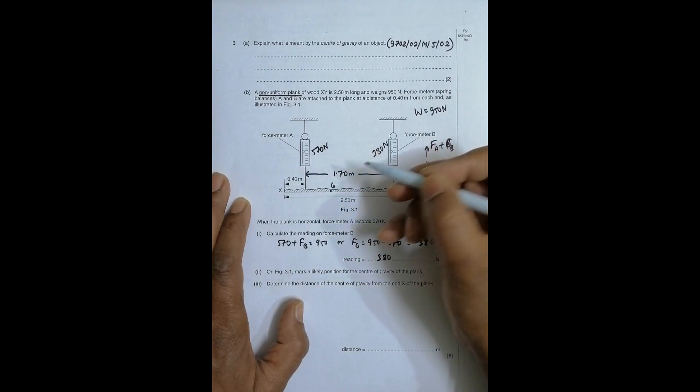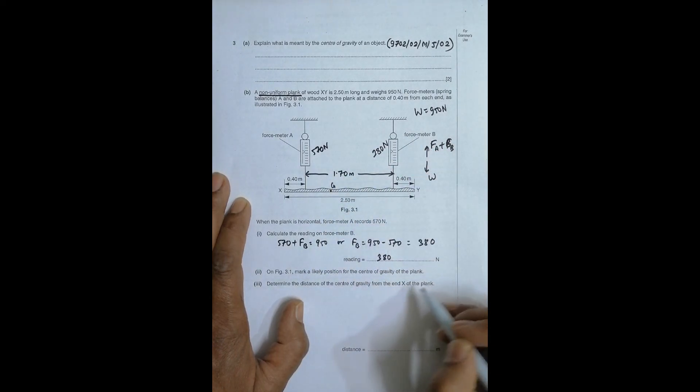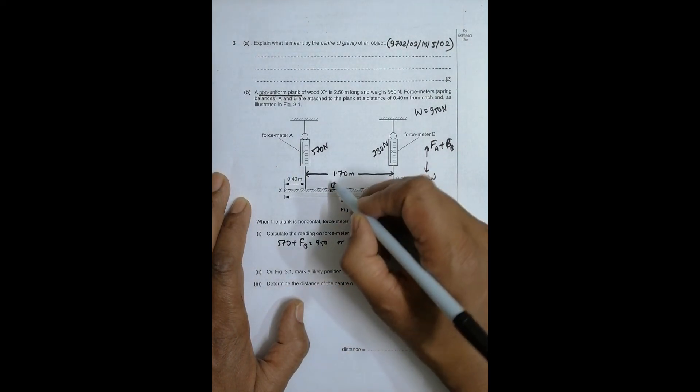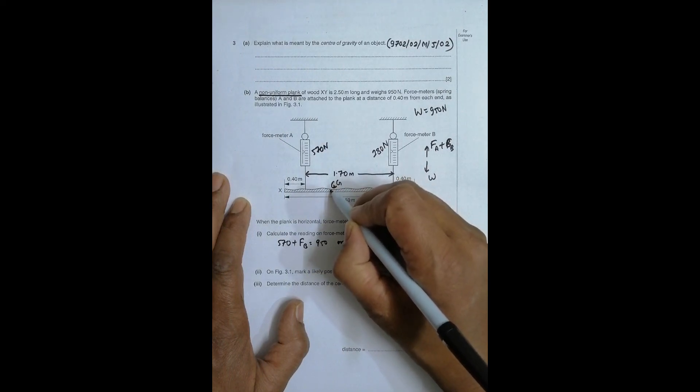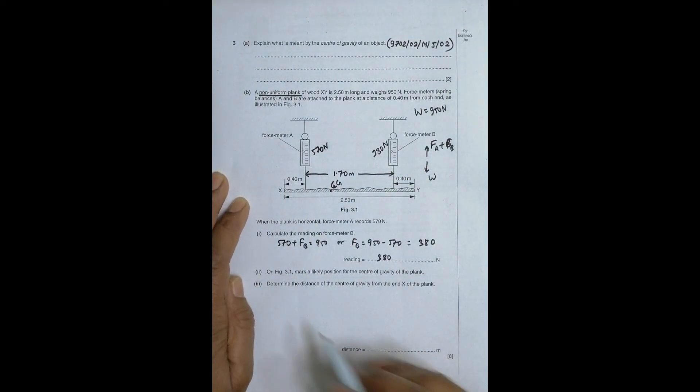Not exactly centered but slightly tilted here. So let us say this is the point of the CG which I have to mark by something. So let me write CG, CG here. Now, number 3.